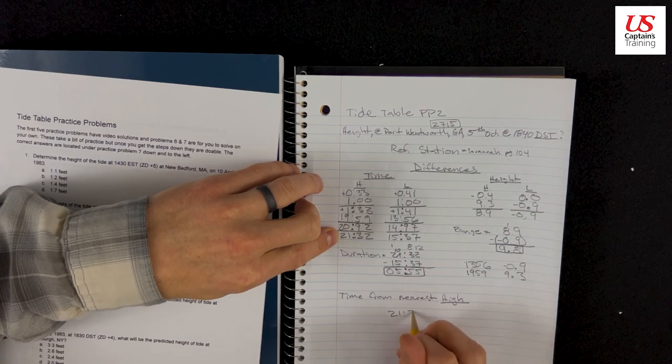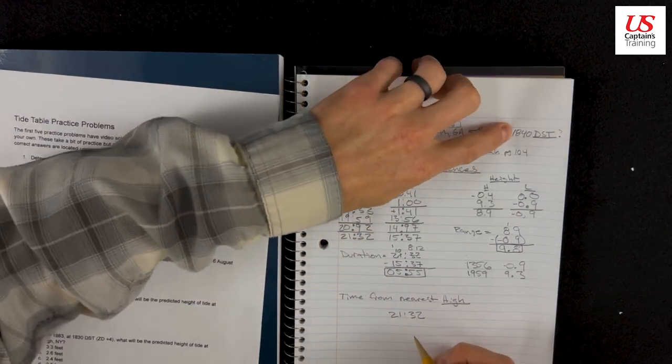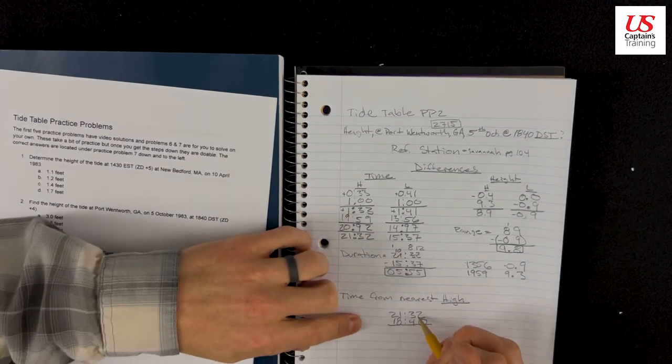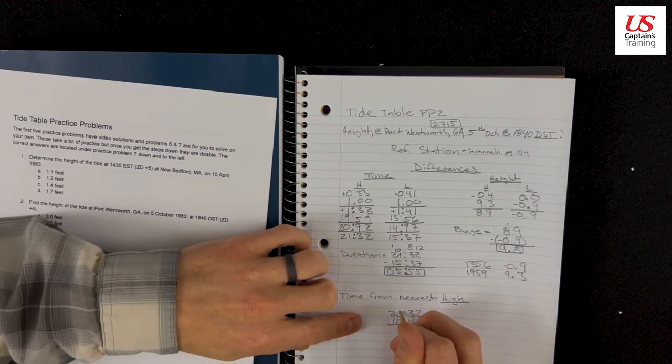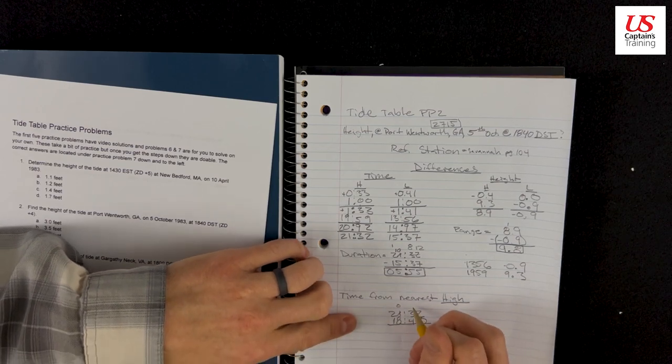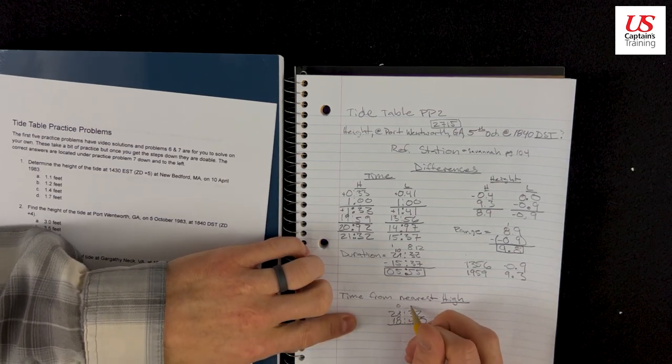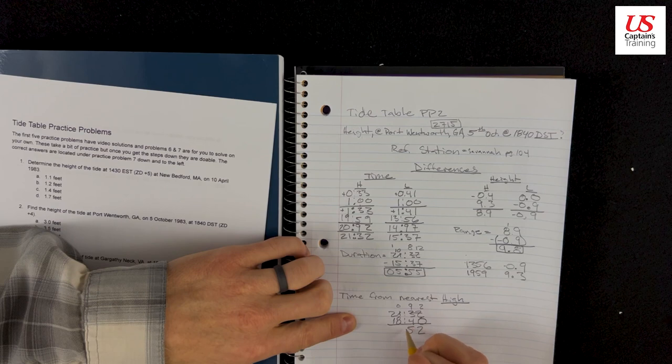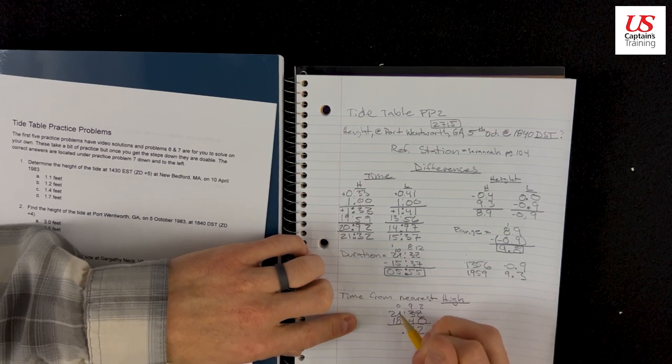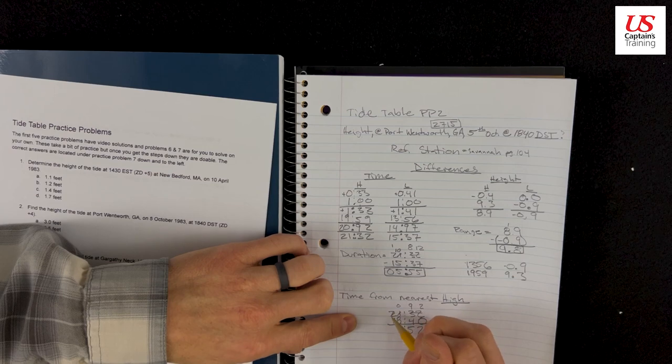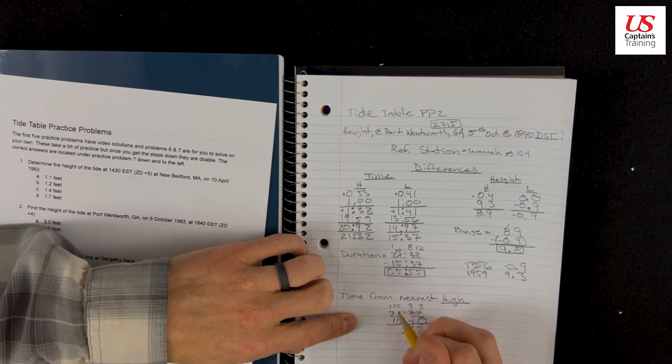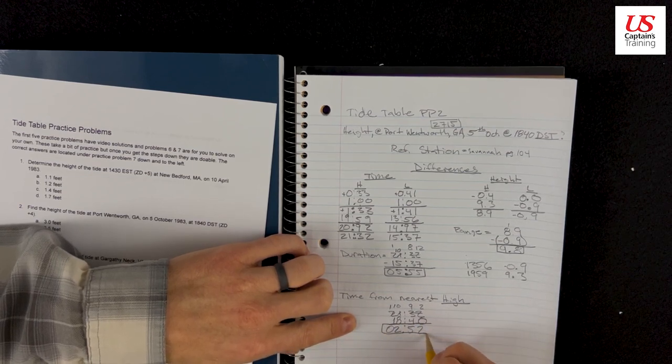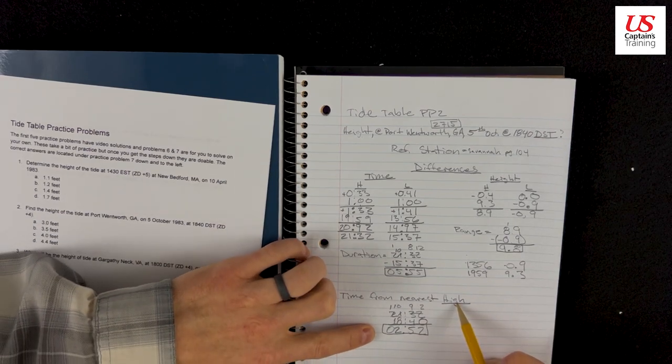And so the nearest high is 21:32. 21:32 minus 18:40. We can't take 40 from 32, so we're going to borrow. This would be 92 now because we add 60. 2 minus 0 is 2. 9 minus 4 is 5. We're going to borrow. This will be a 1. This will be a 10. 10 minus 8 is 2. 1 minus 1 is 0. So we are 2 hours and 52 minutes from the nearest tide, which is the high.